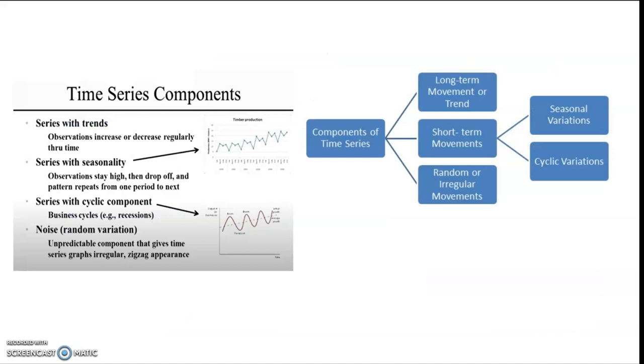After this we may understand the components of time series. Usually there are four components of time series. These include long term movement or trend. Then there are short term movements which include both seasonal variations and cyclical variations and the third type of movements in time series data is random or irregular movements.